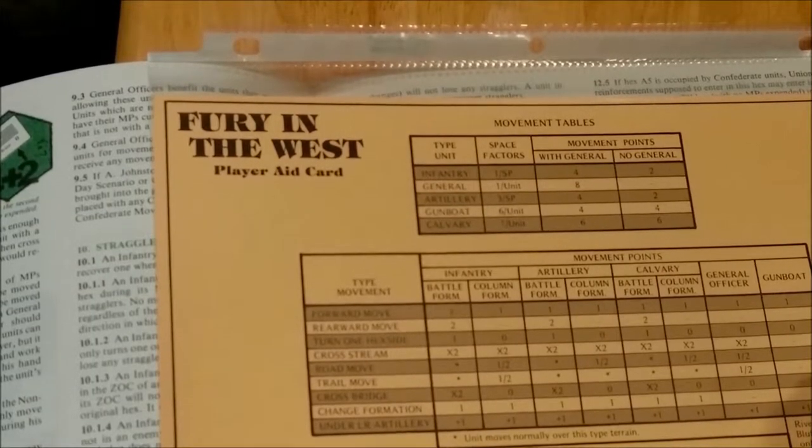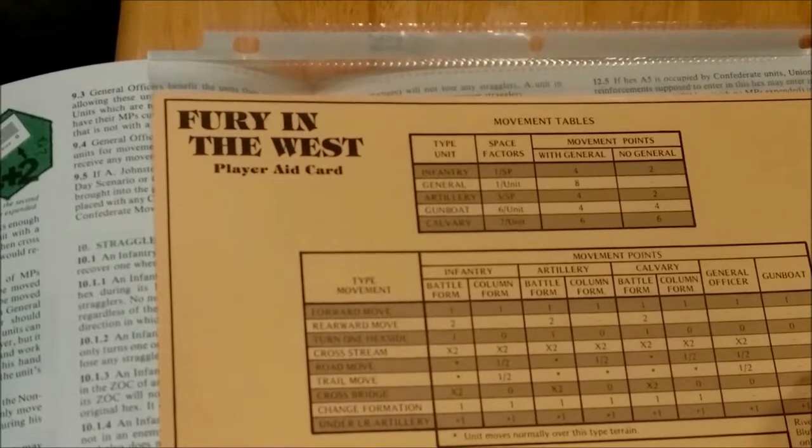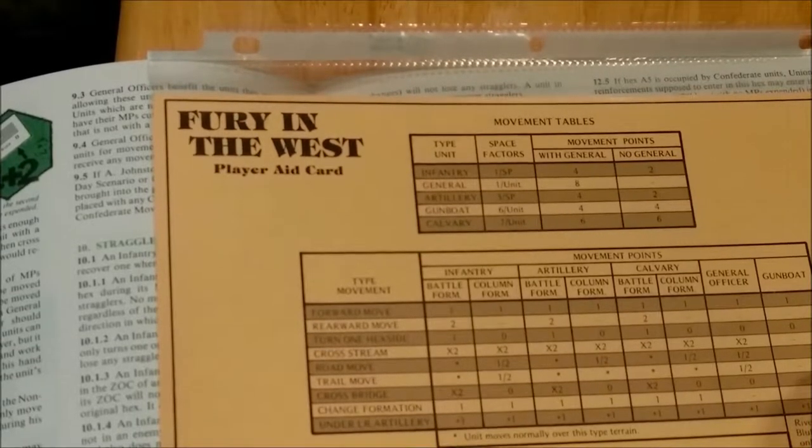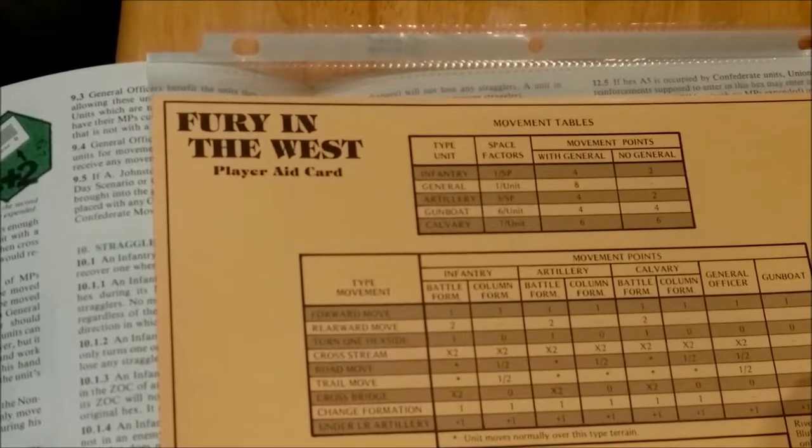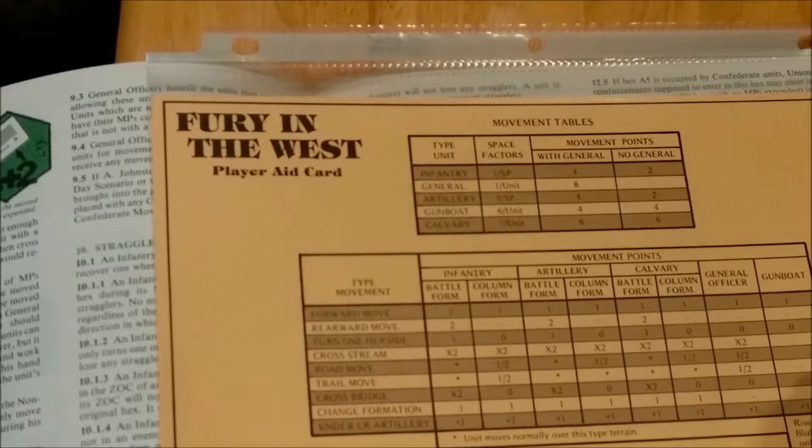If you have a General, you will move your normal movement. If you do not have a General, your movement is halved. So with a General, Infantry units will move four. If they do not have a General, they will move three.